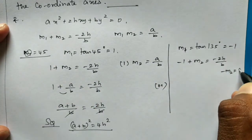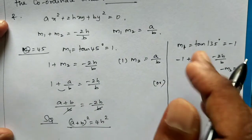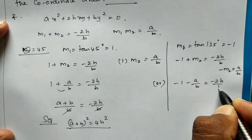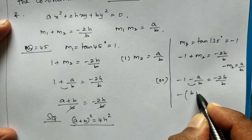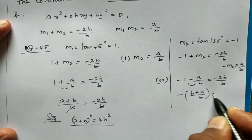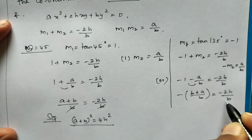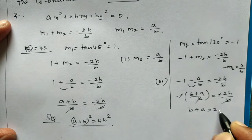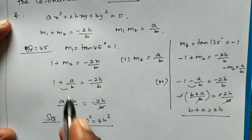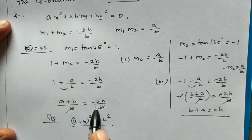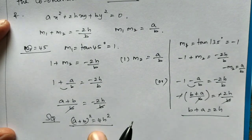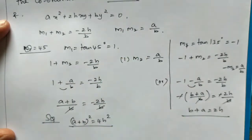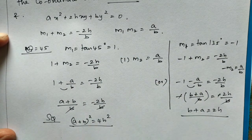Minus M2 = A/B. So -1 - A/B = -2H/B. This gives -(B + A)/B = -2H/B. Cancelling the negatives and B: B + A = 2H. So A + B = 2H, and (A + B)² = 4H². If M2 = -1, we get the answer. One of the lines bisects the coordinate axis.